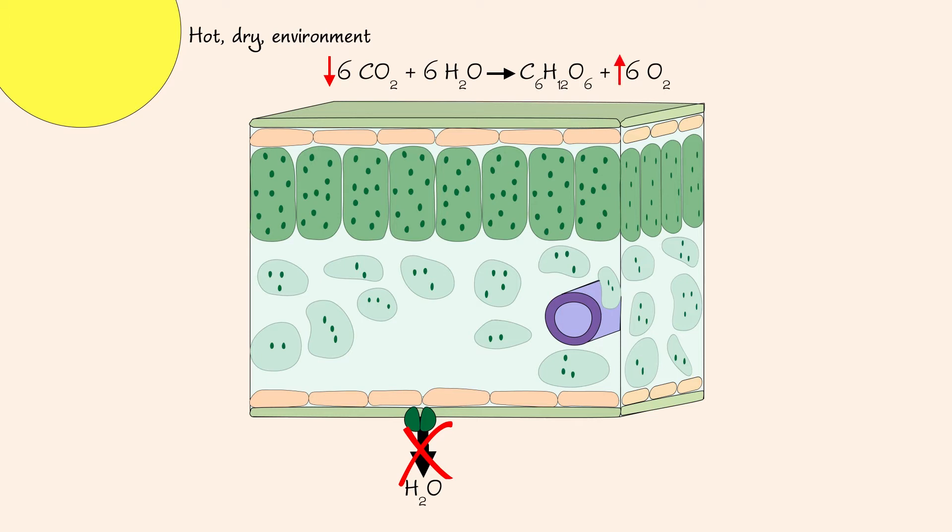Normally, the oxygen produced by photosynthesis diffuses out through the open stomata. But when stomata are closed, oxygen builds up and carbon dioxide decreases in the plant leaf.